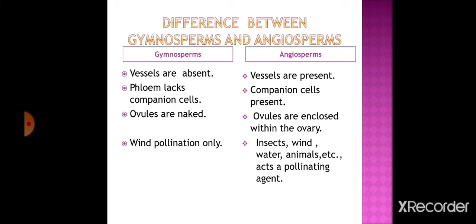Now let us learn the differences between gymnosperms and angiosperms. In gymnosperms, vessels are absent in xylem whereas in angiosperms they are present. Phloem lacks companion cells in gymnosperms whereas companion cells are present in angiosperms. In gymnosperms the ovules are naked, whereas in angiosperms the ovules are enclosed within the ovary. Pollination in gymnosperms is only by wind, whereas in angiosperms pollinating agents include insects, wind, water, and animals.